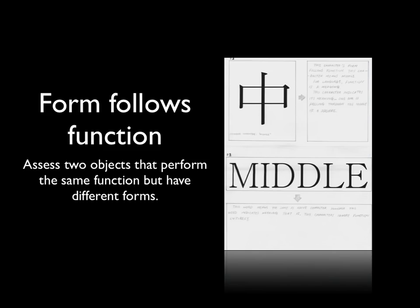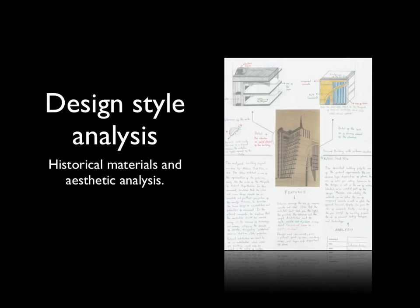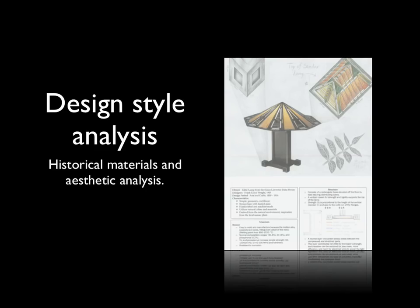In this assignment, students were asked to find two objects: one where form follows function and one where form does not follow function. One of our Chinese students found a nice example in language where the character for 'middle' in Chinese is seen at the top and form follows function clearly in that example. For a design style analysis, we look at the history of design in terms of architecture and other design styles. In this case, the student looked at Italian futurism, but students are always asked to bring in knowledge from other courses — so this student analyzed some of the structural components of the building. The student also looked at an arts and crafts lamp and brought in engineering knowledge from other courses to analyze the base, the glass, and the light.